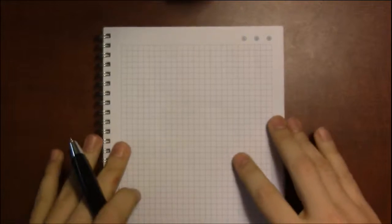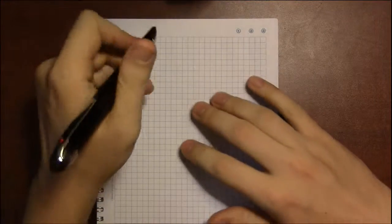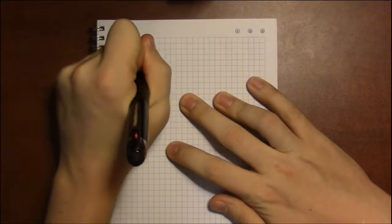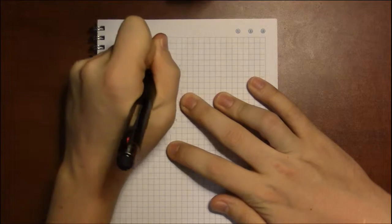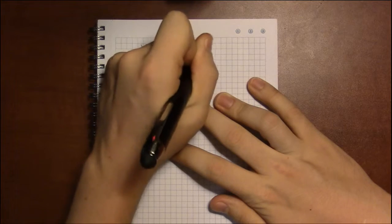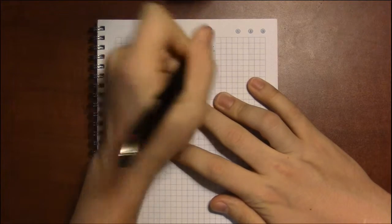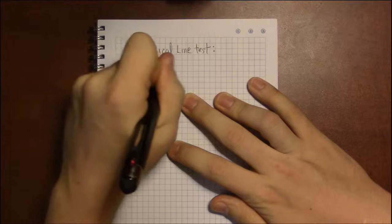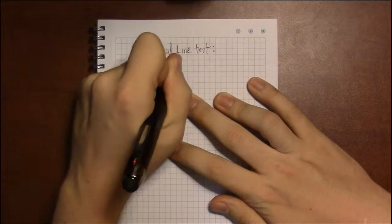So let me write that out for you. The vertical line test states the following: that a graph represents a function